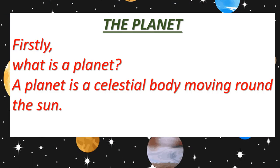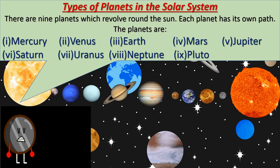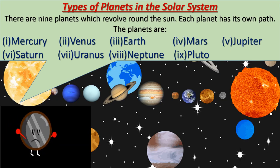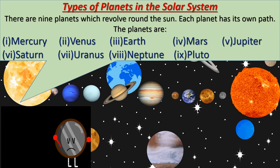The planet. Firstly, what is a planet? A planet is a celestial body moving around the sun. There are nine planets which revolve around the sun. Each planet has its own path. The planets are Mercury, Venus, Earth, Mars, Jupiter, Saturn, Uranus, Neptune and Pluto.